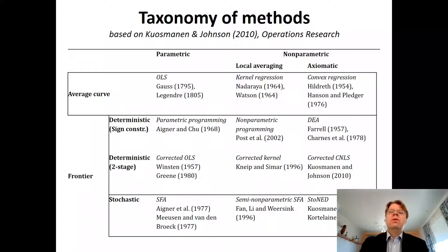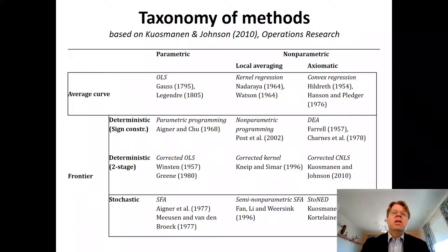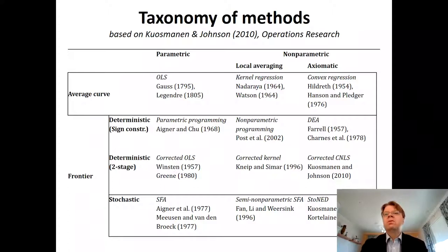The middle and rightmost columns are non-parametric approaches, further split between local averaging approaches and axiomatic approaches. In non-parametric approaches, we do not specify the functional form of the frontier F beforehand; instead, these approaches let the data speak for themselves. We have certain assumptions about the production function, but we do not specify the frontier explicitly.